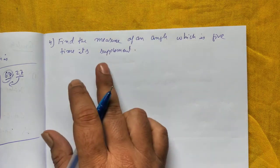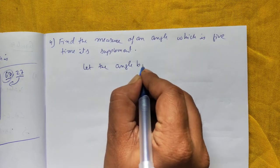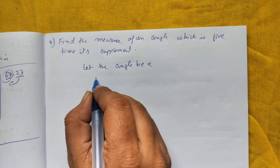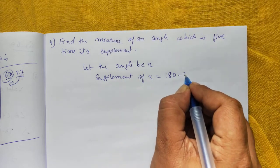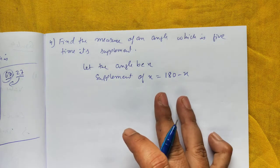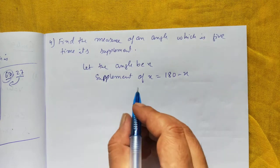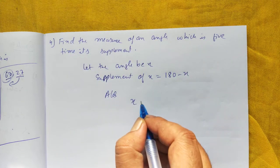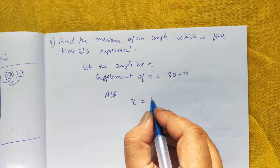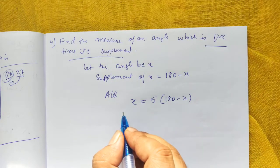And one more last extra question for 6.1. Find the measure of an angle which is 5 times its supplement. So let the angle be X. Supplement of X is 180 minus X. Please go through the introduction video of 6.1 if you want to understand this better. Now as per question, find the measure of an angle which is 5 times its supplement. So 5 times the supplement is 5 times 180 minus X. Now you will solve this.